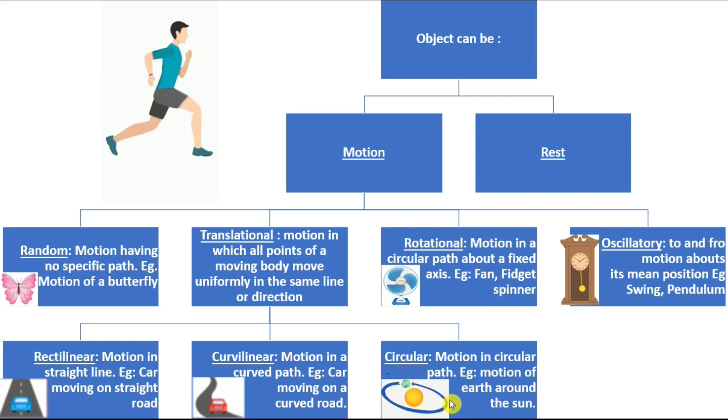Then we have a circular motion. Motion in circular path. The entire body should move. These are all three paths of translational motion. Example is motion of the earth around the sun. Here the motion of the earth, we are not considering the rotation. We are considering the revolution.